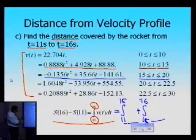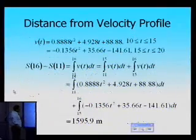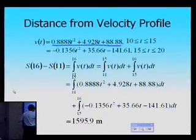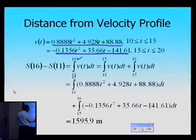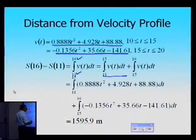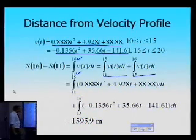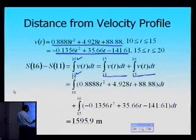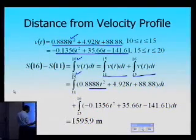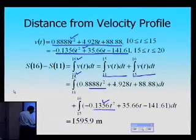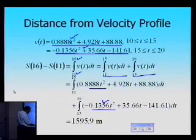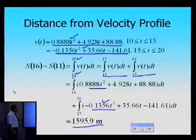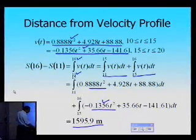I take two splines — the spline going from 10 to 15 and the spline going from 15 to 20 — and break the integral from 11 to 16 into two integrals: one from 11 to 15 and the next from 15 to 16. I substitute the appropriate spline into each integral. Since these are simply integrating second-order polynomials, once I do those two integrals separately, the total distance — the integral of velocity from 11 to 16 — turns out to be 1595.9 meters.